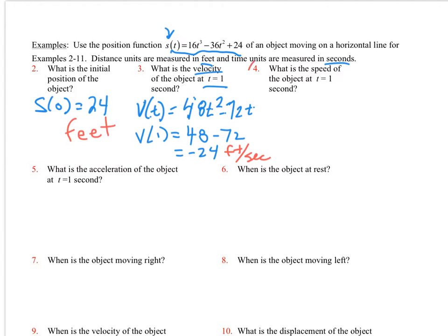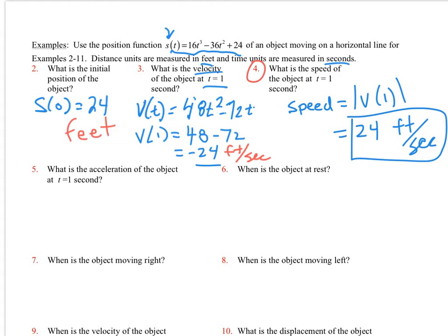And then for number 4. With number 4 now, we are going to do the speed. I don't use S because that's already our position function. It's going to be the absolute value of the velocity at time 1, which would be equal to 24. I just take the absolute value of this one over here. And that would also be in feet per second. But I ignore the direction. Velocity tells us direction. Speed, we ignore the direction.